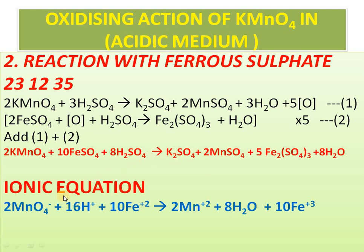For the ionic equation of the FeSO4 reaction: split as 2K+ + 2MnO4−, then 10Fe2+ + 10SO4 2−, then 16H+ + 8SO4 2−. Products: 2K+ + SO4 2− + 2Mn2+ + 2SO4 2− + 10Fe3+ + 15SO4 2− + 8H2O. Cancel the common ions to get the final ionic equation.